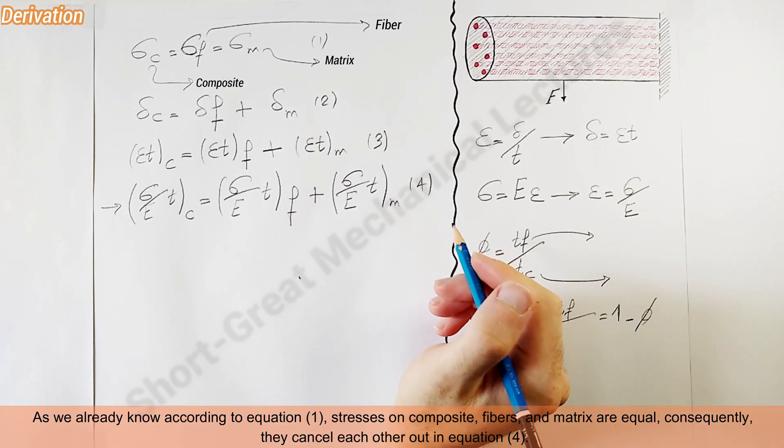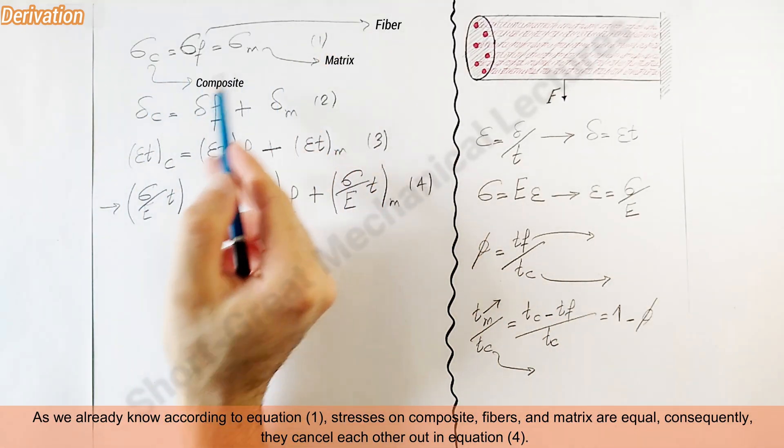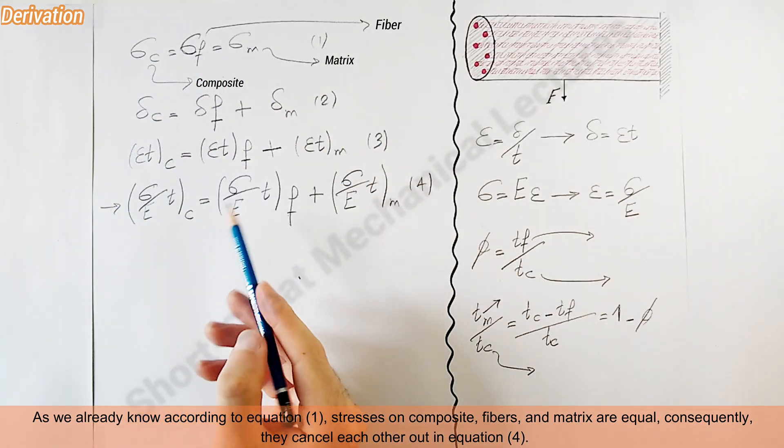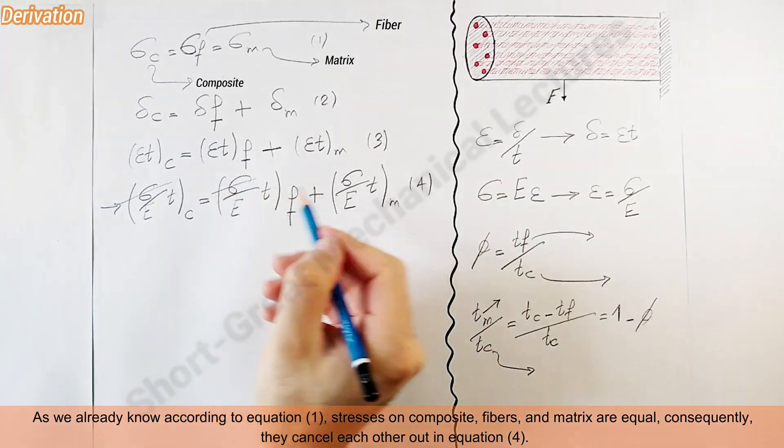As we already know, according to equation one, stresses on composite, fibers, and matrix are equal. Consequently, they cancel each other out in equation four.